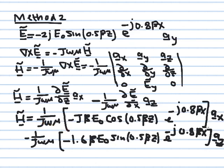Moving the 1/(jωμ) factor inside: β, E-naught, ω, and μ are all constants — β is a propagation constant, E-naught is the electric field amplitude, ω is the angular frequency, and μ is the permeability of free space. All these combine into calculable numerical coefficients once the specific values are known.